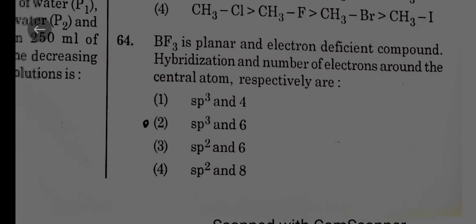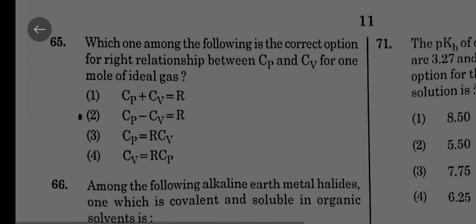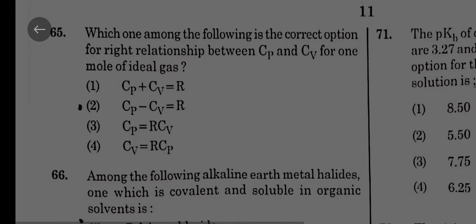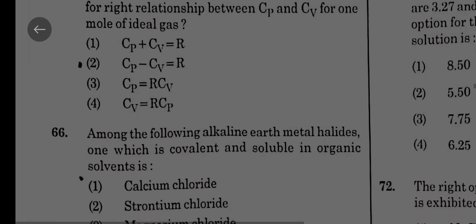Which one of the following is the correct option for the right relationship between Cp and Cv? Direct question: Cp minus Cv equals R.